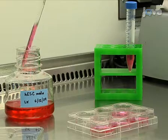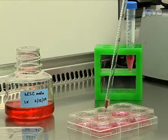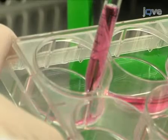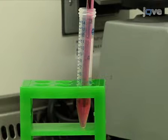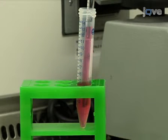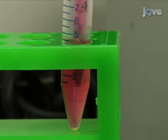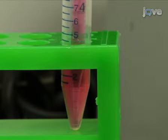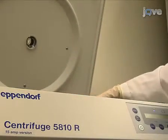Rinse the scraped wells by adding one milliliter of human ES cell culture medium to each well. Collect this rinse and transfer to the conical tube. Pipette the cells gently in the tube to break up the colony pieces to the desired size. Centrifuge the cells for five minutes at 200 g's.